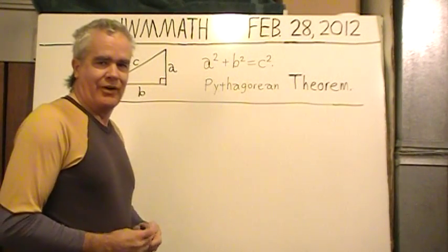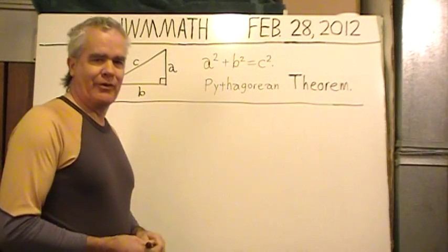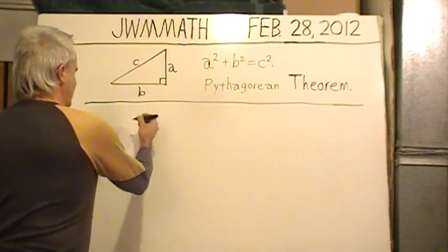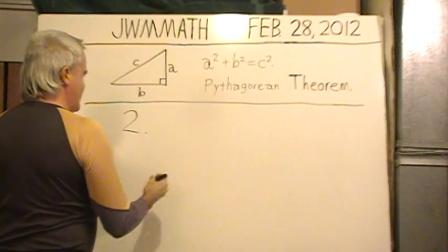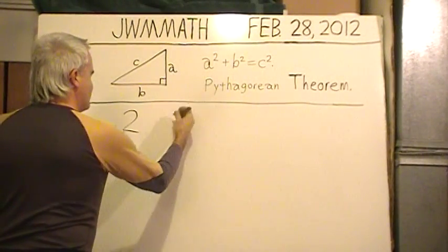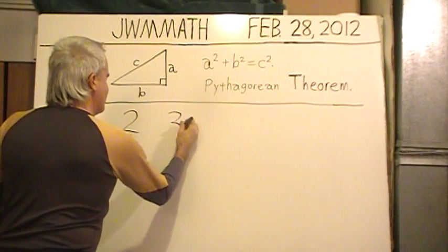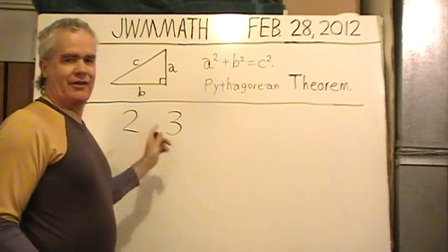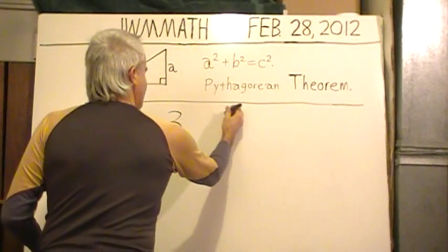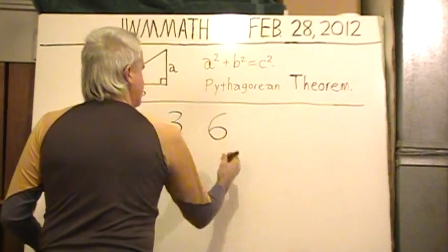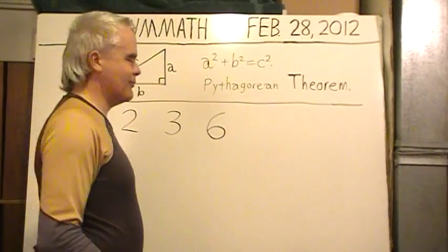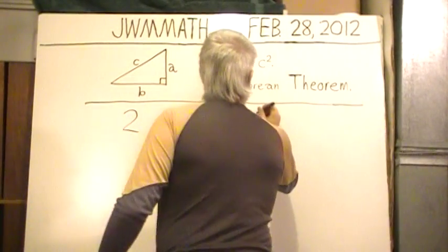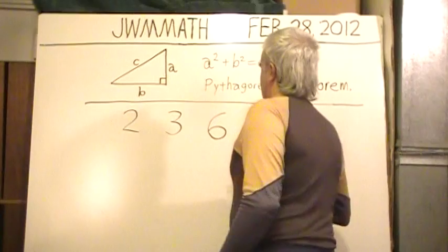So let's pick a small, easy whole number, for example, two. Then I'm going to add one to it. Two plus one gives three. And then multiply the two times three. And finally, to that product of six, add one.